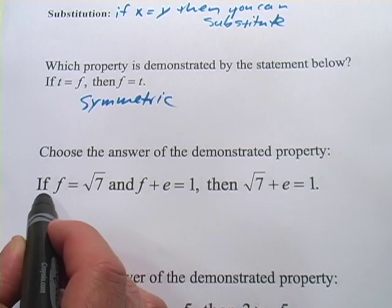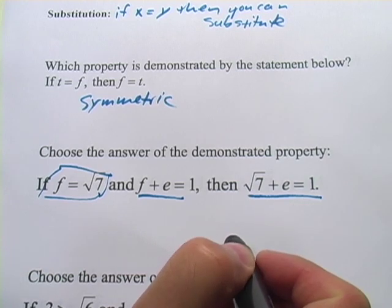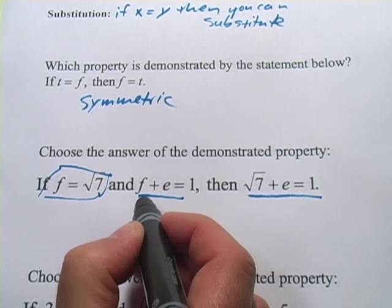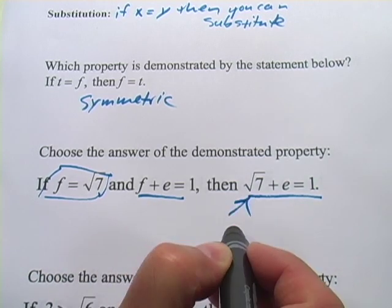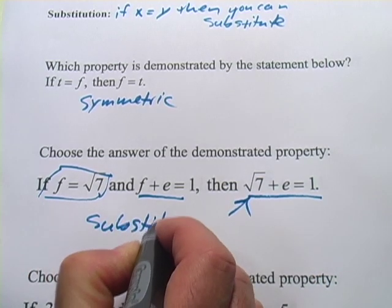But they tell us something, that f equals the square root of 7, and then you have one equation and another equation, and in the second equation they've just substituted square root of 7 in for f. So that is going to be the substitution property.